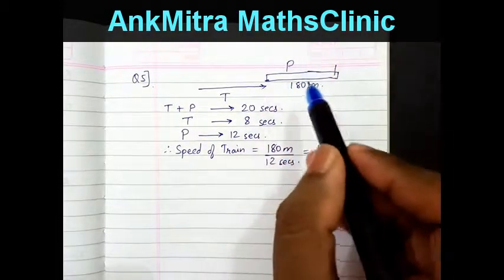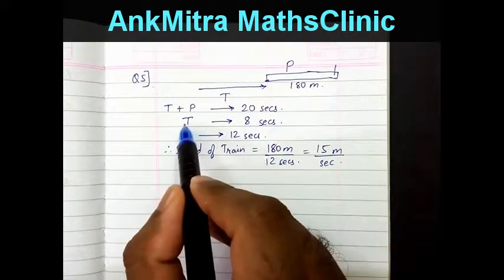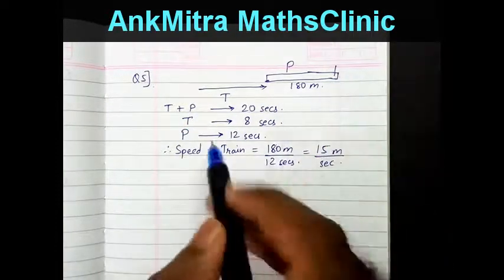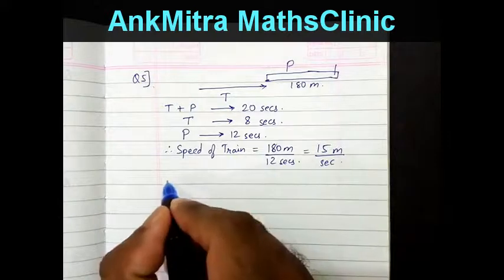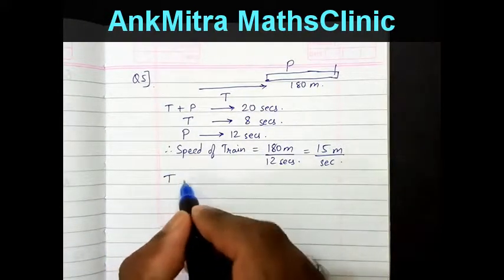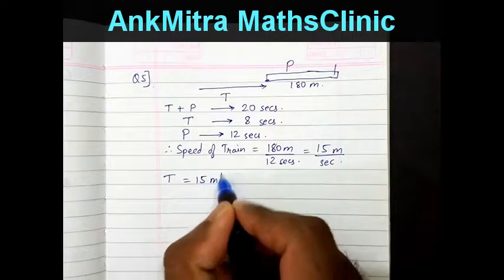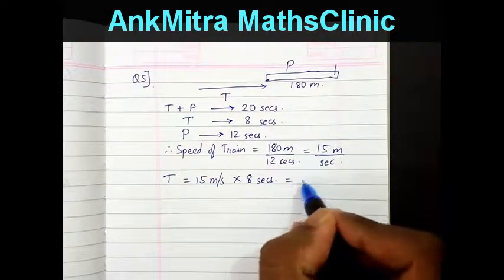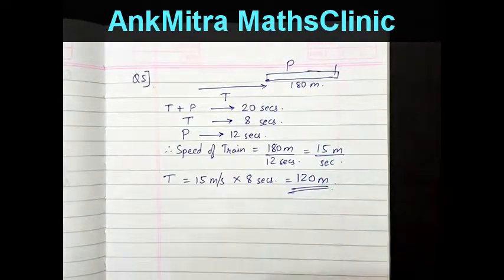We use this speed to find the length of the train. The train takes 8 seconds to cross the man, covering a distance equal to its own length. So length of train equals 15 meters per second multiplied by 8 seconds, which comes to 120 meters. This is the length of the train and our required answer.